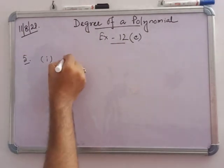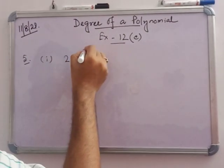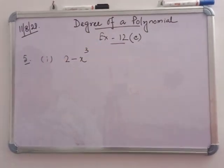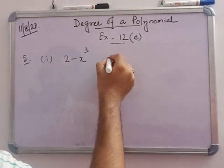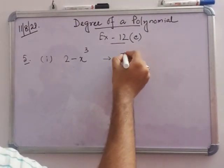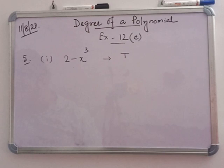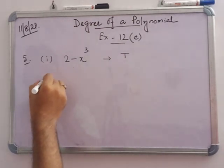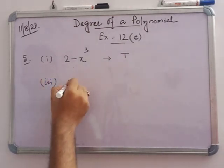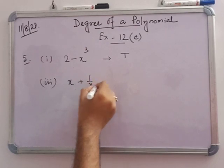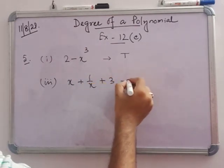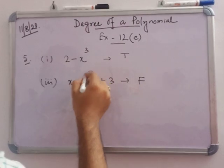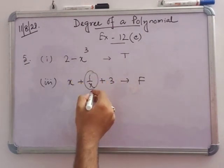In problem 4: '2 minus x cubed is a polynomial of degree 3' — that is true. Number 3: 'x plus 1/x plus 3 is a polynomial' — that is false, because 1/x is present.